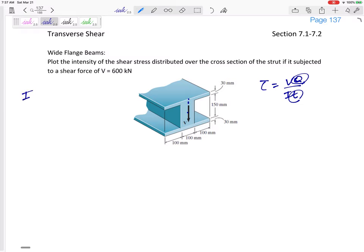Before I get too far, let me find the I. So for this shape, I think it's easiest to do one-twelfth of the whole rectangle minus these two rectangles. So one-twelfth, let's see 300 height 210 cubed minus one-twelfth 100 height of 150 cubed and there are two of those. So I've got the I.